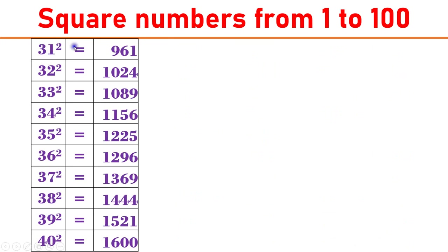31 square equals 961. 32 square equals 1024. 33 square equals 1089. 34 square equals 1156. 35 square equals 1225. 36 square equals 1296. 37 square equals 1369.